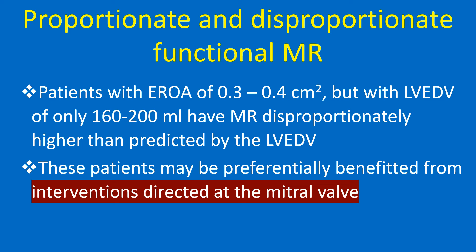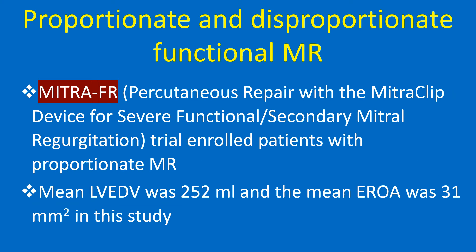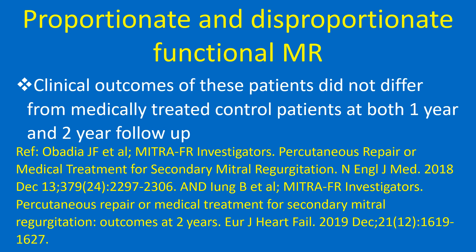Patients with an EROA of 0.3 to 0.4 square centimeters but with LVEDV of only 160 to 200 ml have MR disproportionately higher than predicted by LVEDV. These patients may be preferentially benefited from interventions directed at the mitral valve. The MitraFR trial enrolled patients with proportionate MR; mean LVEDV was 252 ml and mean EROA was 31 square millimeters. Clinical outcomes of these patients did not differ from medically treated control patients at both 1-year and 2-year follow-up.